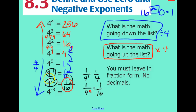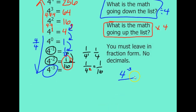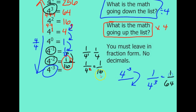We're just moving our negative exponents to the bottom and making them positive. So four to the power of negative three — move it to the bottom of the fraction — becomes four to the power of three, and we already evaluated that as 64, so this is just one over 64. You can plug four to the power of negative three into your calculator and it will give you one over 64 as a decimal. However, we want everything in fraction form.